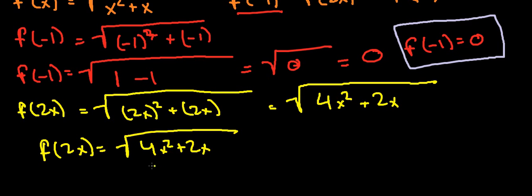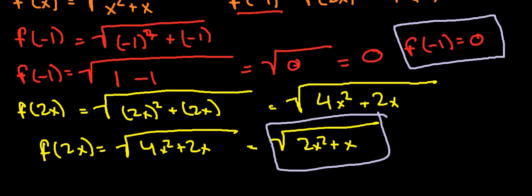And this doesn't really simplify. I mean, what we can do, we could divide out a 2 from here, but it's not really going to get much simpler. So if we really wanted to simplify it a little bit, it would be the square root of 2x squared plus x. But it's not going to simplify any more than that. We can pull out an x, which would leave us 2x plus 1, but we're not going to be able to get rid of this radical sign. So we'll just leave it like that.